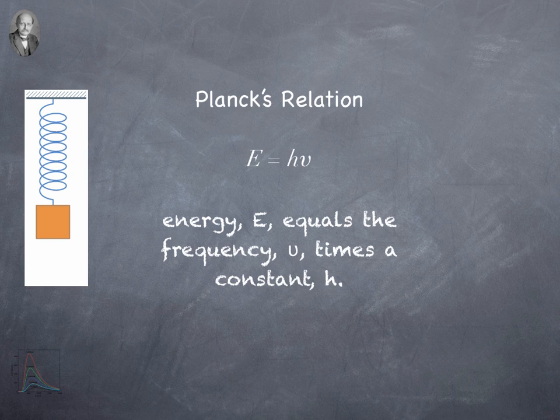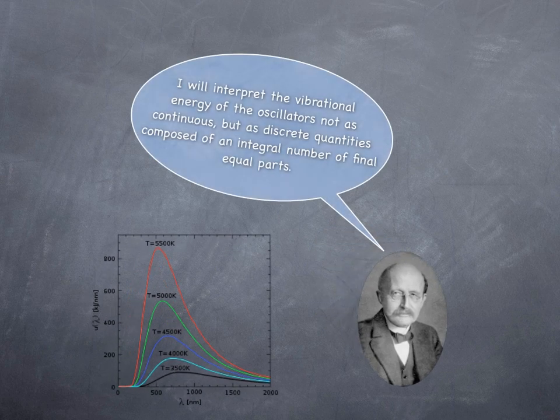This makes sense — the higher the frequency, the higher the energy. The frequency is how quickly the thing is bouncing up and down. So if it's bouncing really, really quickly, all other things being equal, there's going to be more energy than if it's bouncing really slowly. Planck got stuck with his analysis and just decided to do a statistical analysis trick. He interpreted the vibrational energy of the oscillators not as continuous, but as a discrete quantity — composed of an integer number of finite equal parts.